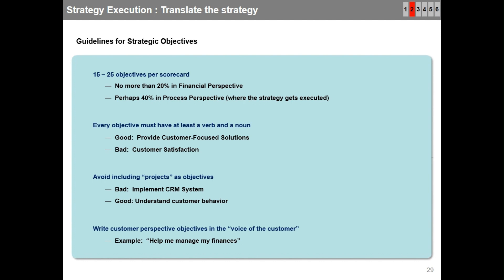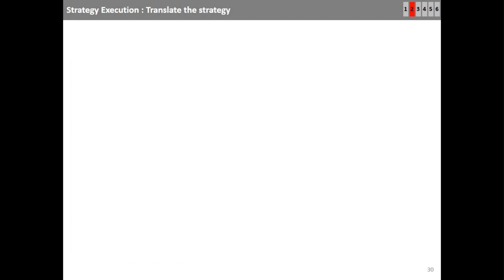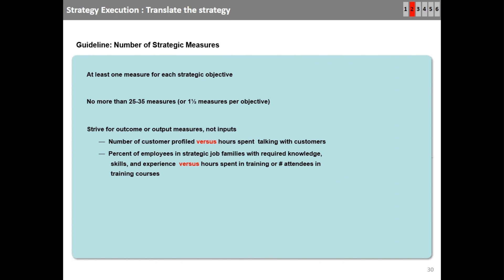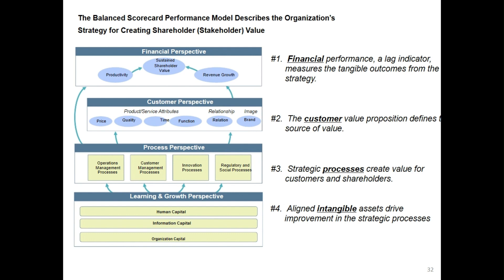Write customer perspective objectives in the voice of the customer, for example: 'help me manage my finances.' The guidelines for number of strategic measures: at least one measure per strategic objective, no more than 25 to 35 measures total (about one and a half measures per objective), and strive for outcome or output measures, not inputs. The balanced scorecard performance model describes how financial performance (a lag indicator) measures tangible outcomes, the customer value proposition defines the source of value, strategic processes create value for customers and shareholders, and aligned intangible assets drive improvement in strategic processes.